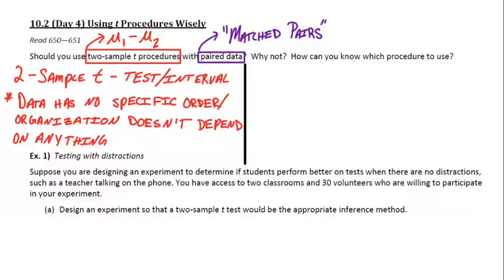But if you'll remember from last chapter, when we did paired data, we did a one sample T test or interval for mu sub d. So the capital D in the subscript there, that stood for the true mean difference.